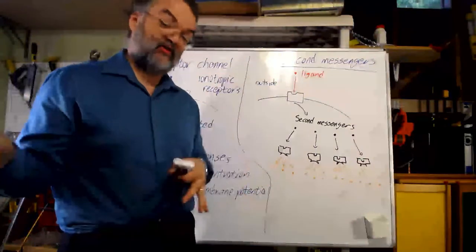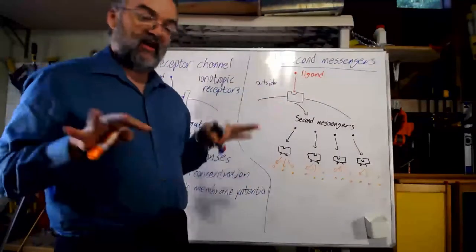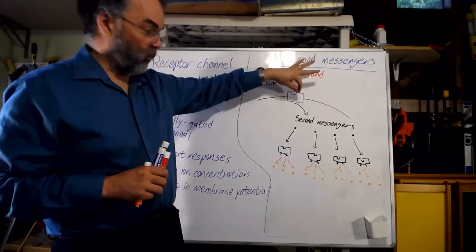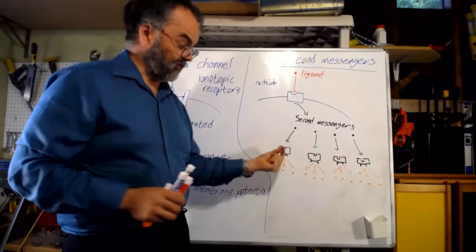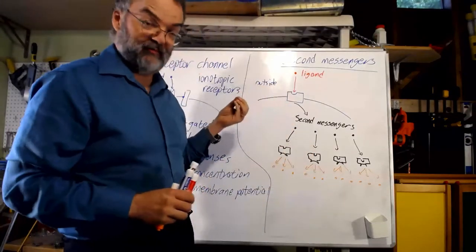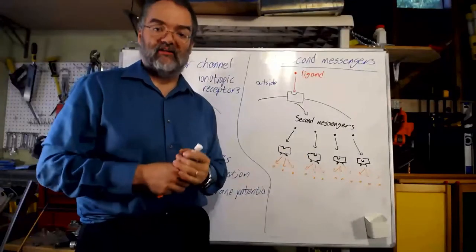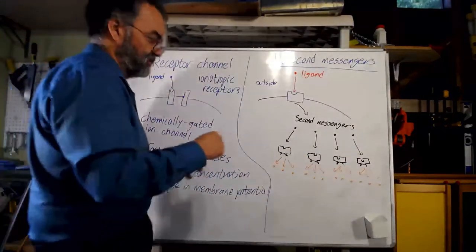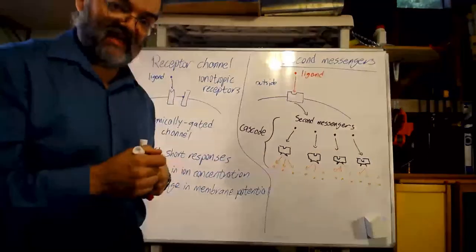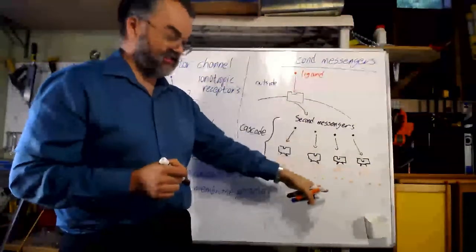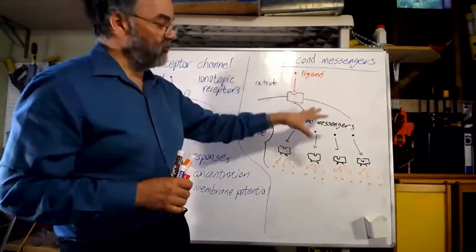Those second messengers are probably allosteric regulators for enzymes inside the cell, which in turn make some other molecule — sometimes a third messenger. This is one common way it works: one ligand molecule binds to one receptor, which makes a bunch of second messengers; those act as regulators for enzymes inside the cell, each making a bunch of third messengers. You get a big amplification. We refer to this whole process as a cascade, or a second messenger cascade, where a little signal here causes a lot of signal here.